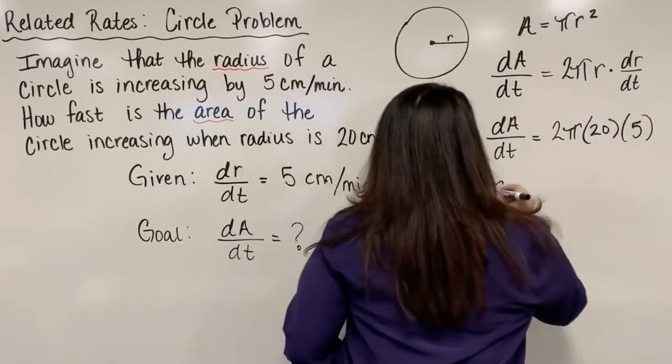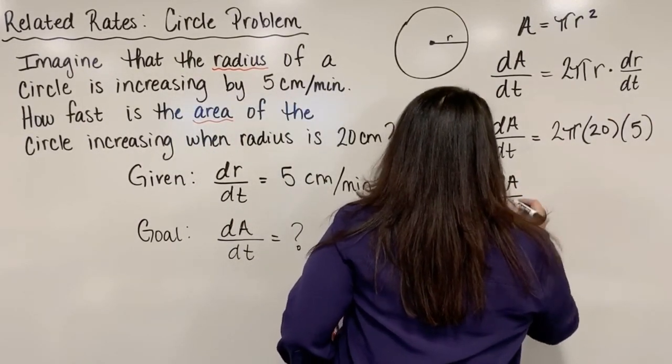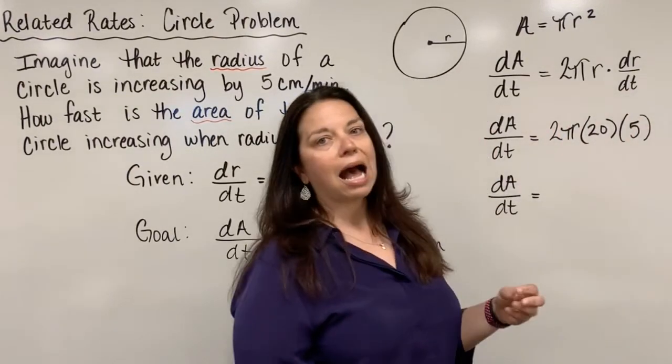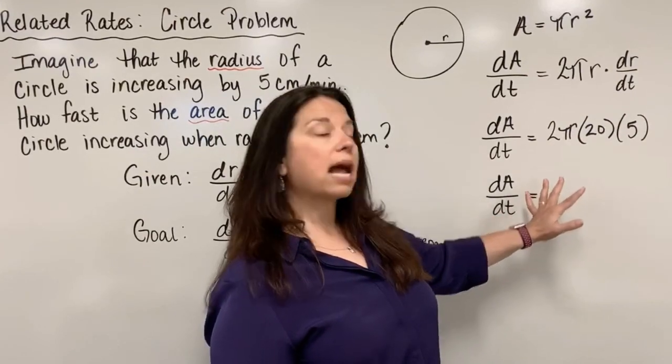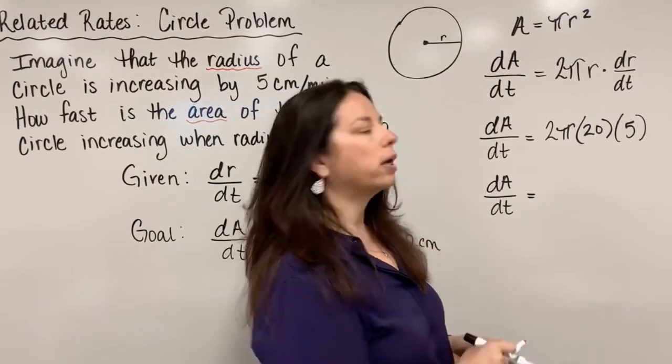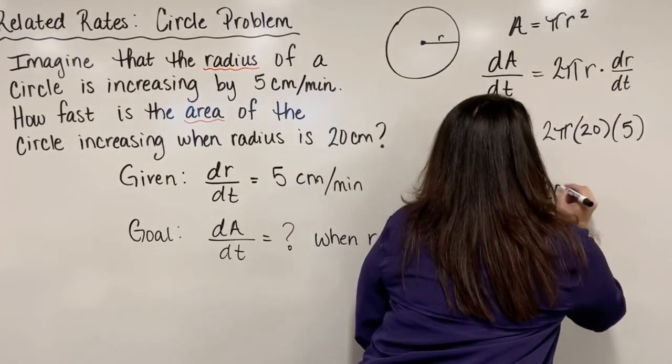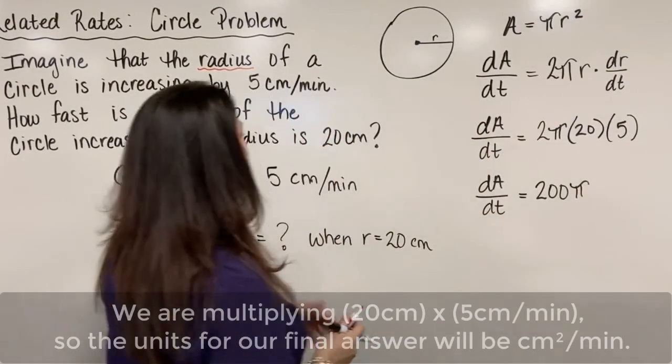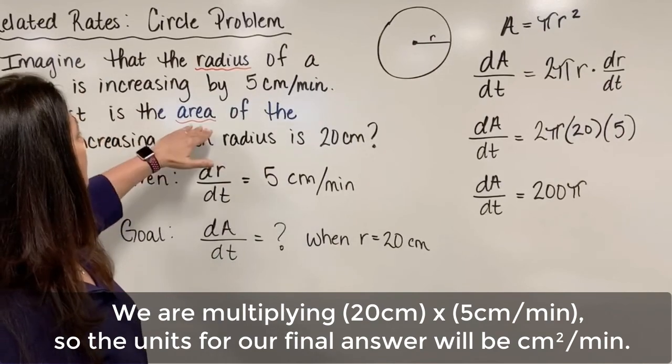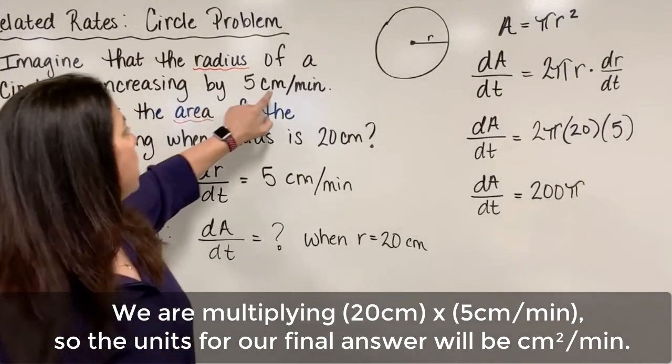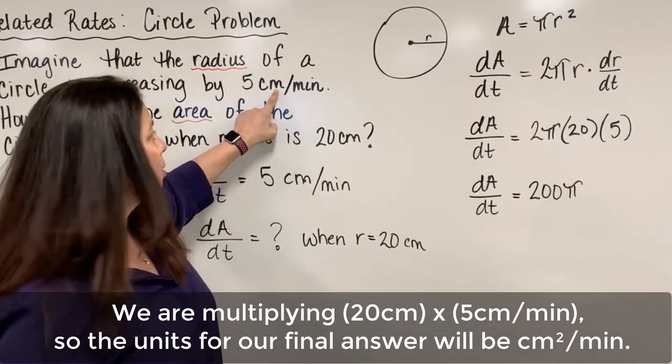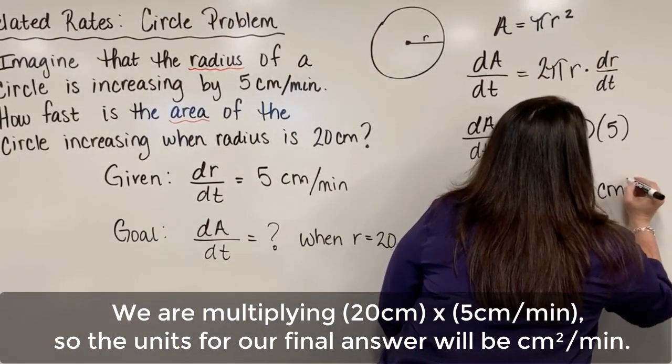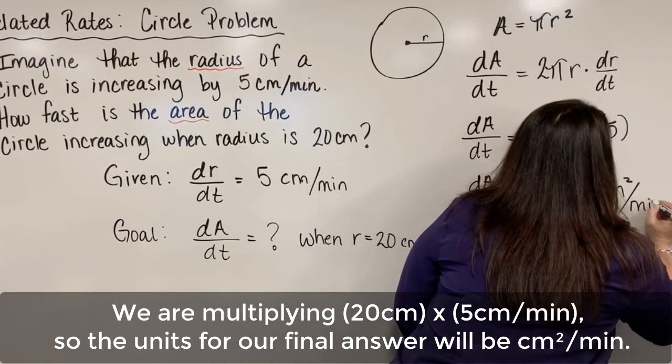We finish this off. We can say that dA/dt equals, if I do all the multiplication here and leave pi as pi for an exact answer, we end up with 200 pi. And let's put a unit here. 200 pi what? Well, the area we got to imagine is going to be centimeters squared, but per minute that's elapsing. So over here we would have centimeters squared per minute.